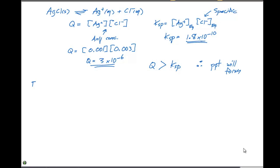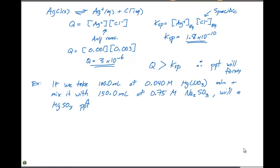I'll show you this example here. If we take 100.0 milliliters of 0.040 molar Mg(NO3)2 solution and mix it with 150.0 milliliters of 0.75 molar Na2SO3, will a MgSO3 precipitate form? The Ksp value listed for magnesium sulfite is 3.2 times 10 to the minus 3. And as a note here, we're going to assume that our volumes are additive.